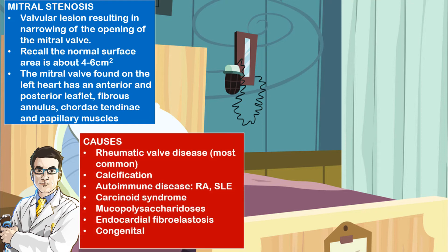Causes of mitral stenosis include rheumatic valve disease, which is the most common cause, calcifications, autoimmune diseases such as rheumatoid arthritis, systemic lupus erythematosus, carcinoid syndrome, mucopolysaccharidosis, endocardiofibroelastosis, and some congenital issues.